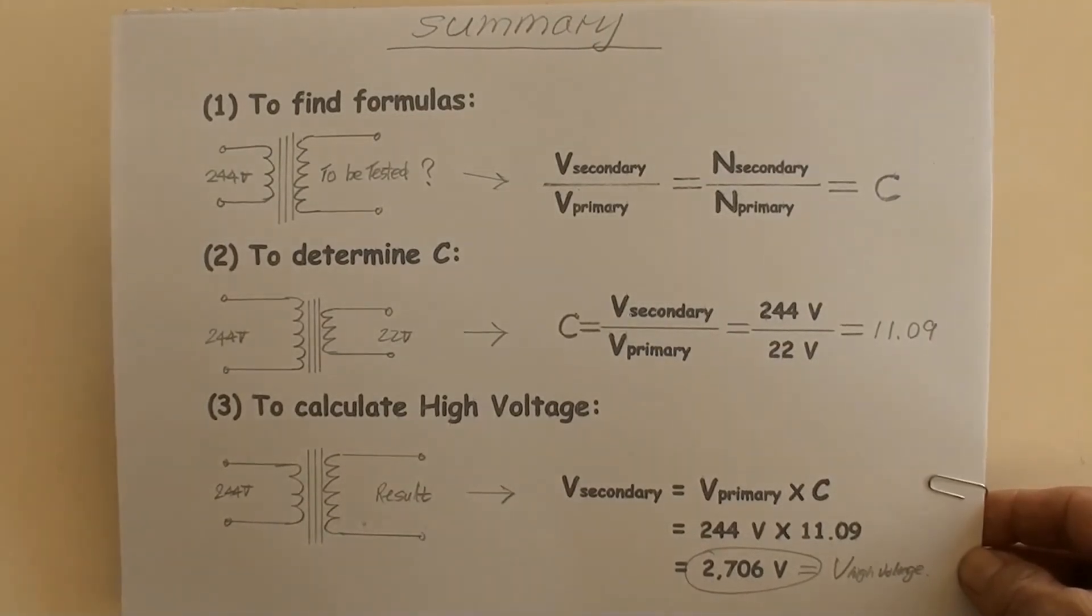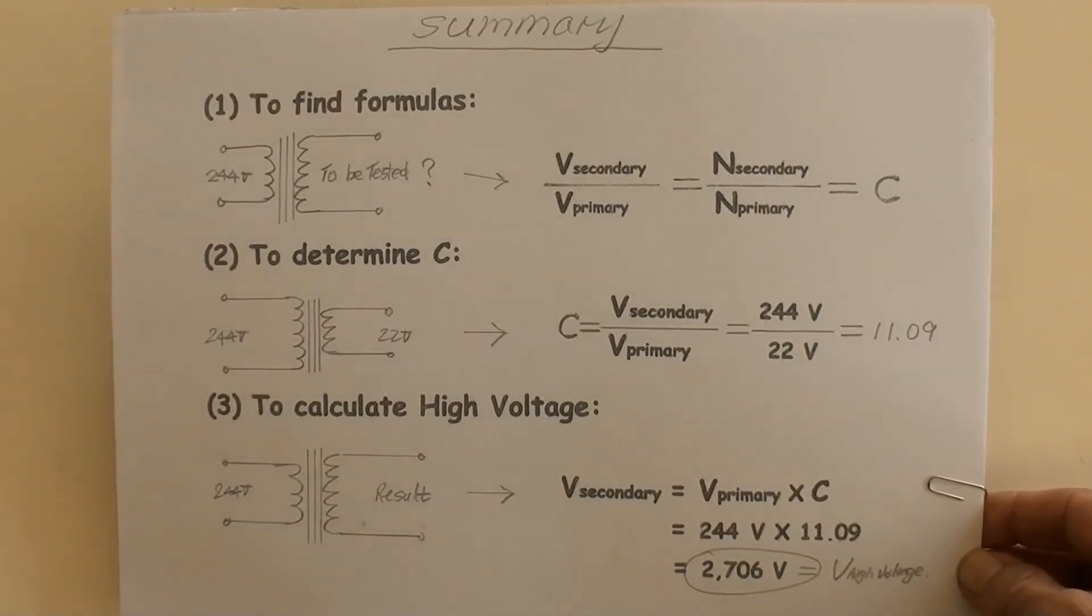Now you have known how to measure high voltage from a transformer secondary winding by using a multimeter.